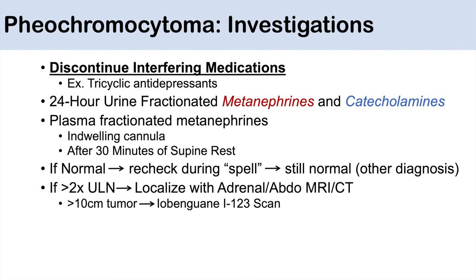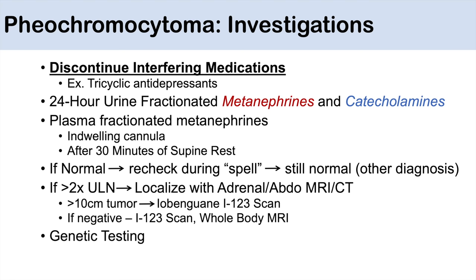If the tumor is greater than 10 centimeters, use an iobenguane I-123 scan. If no tumor is seen on imaging, consider an I-123 scan or whole-body MRI. Genetic testing should also be discussed — looking for the RET proto-oncogene in MEN2 syndromes and for a VHL mutation — and we want to determine if the tumor is malignant.